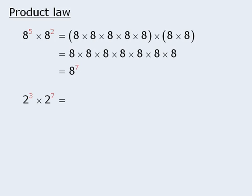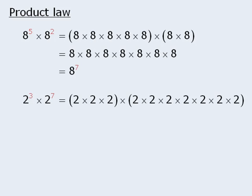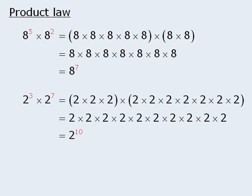Now consider this example. This time we can rewrite 2 to the power of 3, and then rewrite 2 to the power of 7. When we combine both parts, we get the product of 10 twos, which we can now rewrite as 2 to the power of 10. So 2 to the power of 3 times 2 to the power of 7 is equal to 2 to the power of 10.